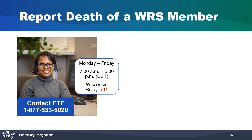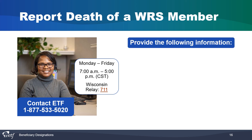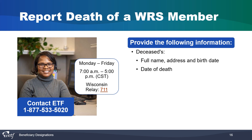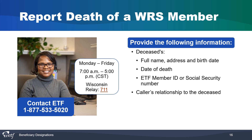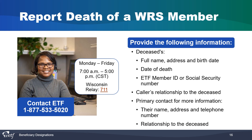When a WRS member dies, contact ETF at 1-877-533-5020, Monday through Friday, 7 a.m. to 5 p.m., or contact Wisconsin Relay 711 for the hearing impaired. The following information must be provided to the benefits specialist: the deceased's full name, address, and date of birth; the date of death; and the ETF member ID or social security number. Also provide the caller's relationship to the deceased, and the primary contact's name, address, telephone number, and their relationship to the deceased.